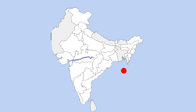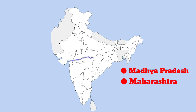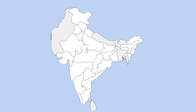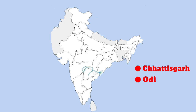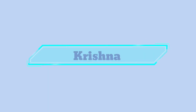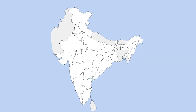Narmada: it flows through the states of Madhya Pradesh, Maharashtra, and Gujarat. It is also known as the Reva river. Mahanadi: it flows through the states of Chhattisgarh and Odisha. The longest dam, Hirakud, stands across this river.